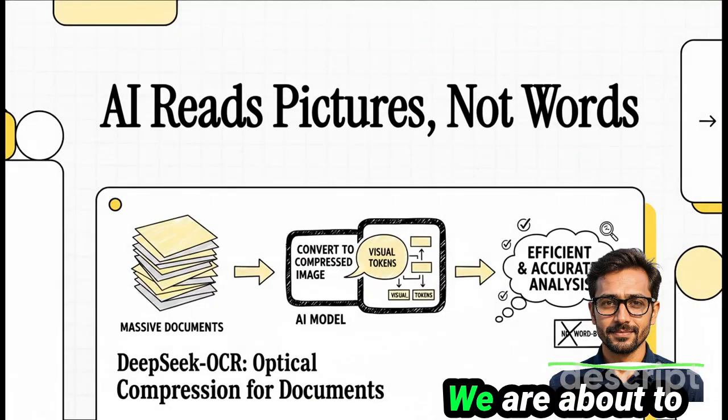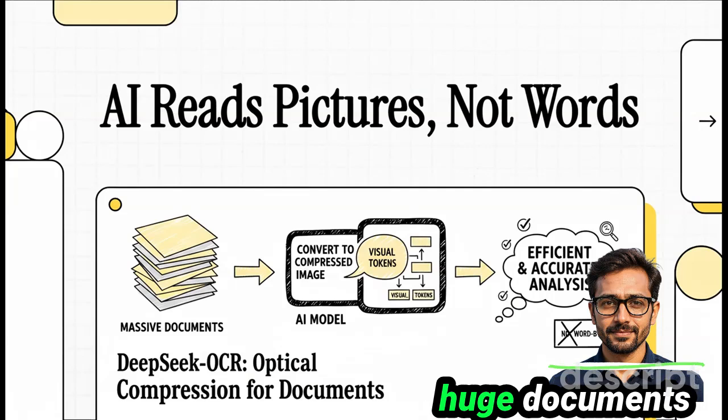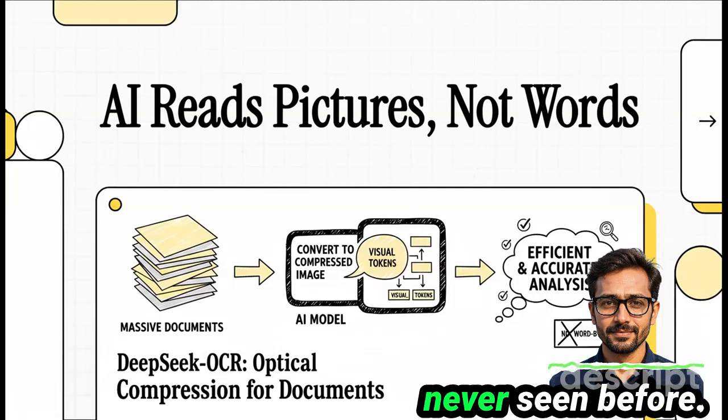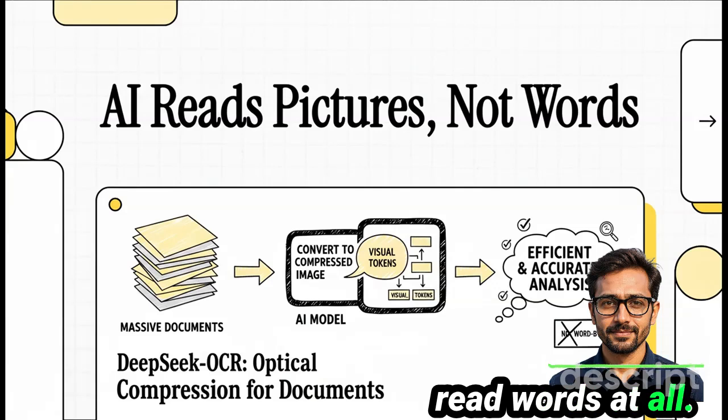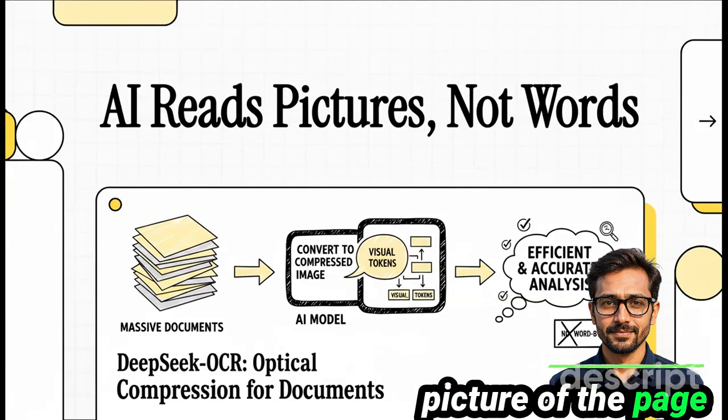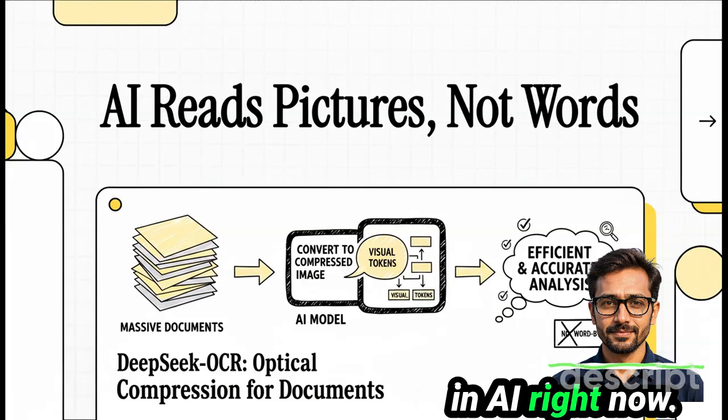All right, you're going to want to see this. We are about to break down a pretty wild new idea for an AI that deals with huge documents in a way I have never seen before. Get this, it doesn't read words. At all. Instead, it looks at a picture of the page. And that one little trick might just solve one of the biggest headaches in AI right now.